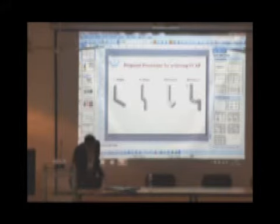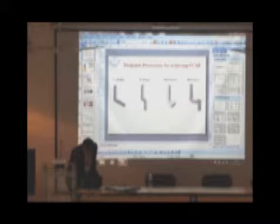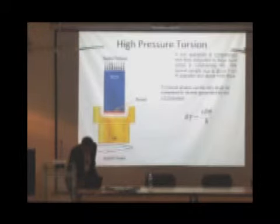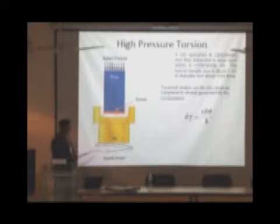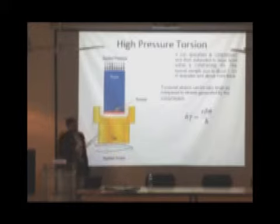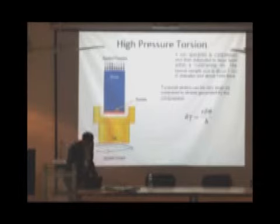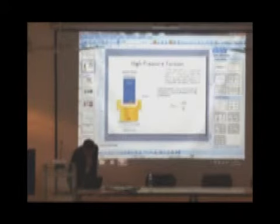We are able to get up to 4.97 equivalent plastic strain in the case of aluminum. Designing of this die is really very tough. This was one of the processes we have attempted here at DEI. Then the second process, high pressure torsion, we have also tried through FEM simulation.